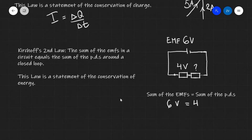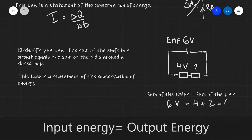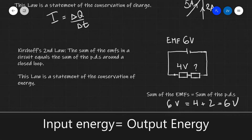So this will be 4 plus something else, which of course is going to be 2 volts, so this will be equal to 6 volts as well. So the PD around the second resistor will be 2 volts.